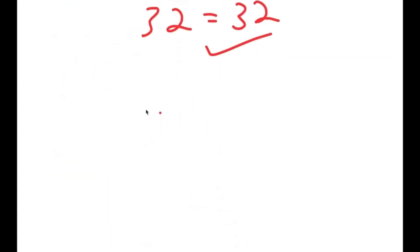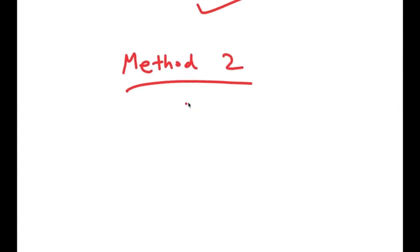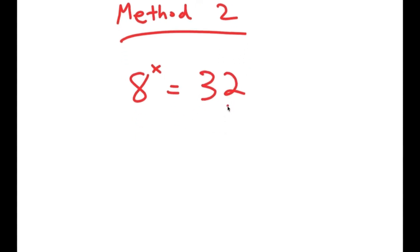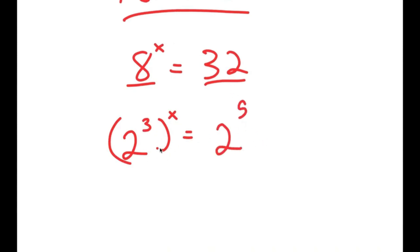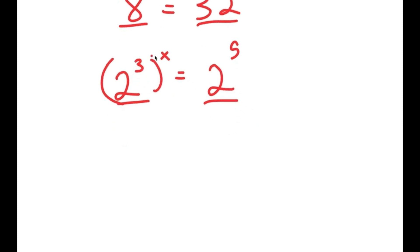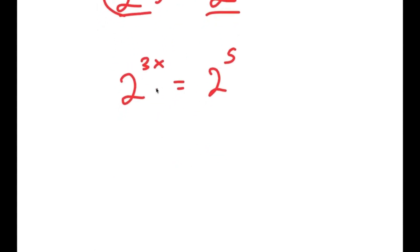I also have a second method of solving this problem. For the second method, we have the same equation: 8 to the power of x is equal to 32, and this is a simpler method. I'm going to start by rewriting 8 as 2 to the power of 3 and 32 as 2 to the power of 5 — rewriting both as the same base. So 2 to the power of 3 to the power of x is the same thing as 2 to the power of 3x, which is equal to 2 to the power of 5.